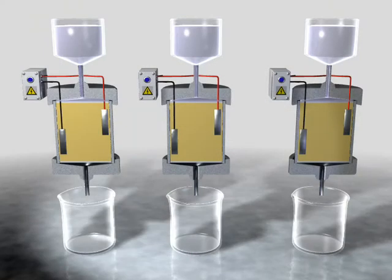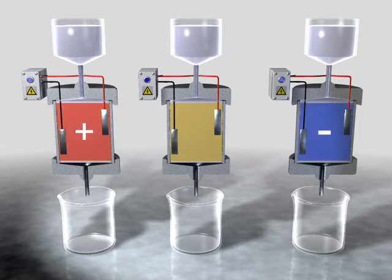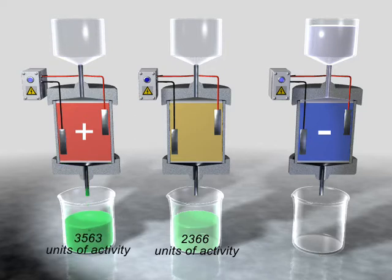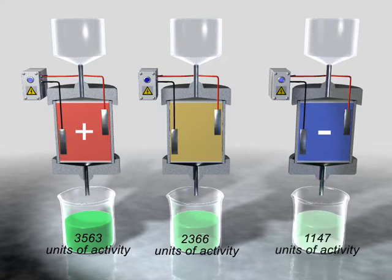The antibody trapped on the column via the interaction with the human serum albumin protein was subsequently eluted and quantified by measuring the units of activity. With no potential applied to the column during the trapping step, 366 units of antibody activity were recovered. With a positive potential applied to the column during the antibody trapping step, the amount recovered increased. When a negative potential was applied during the trapping step, the amount of antibody recovered decreased.